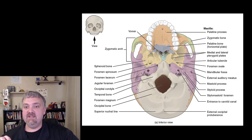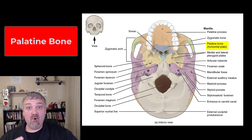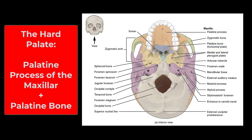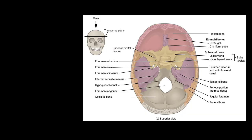Here we see the underside of the skull. The palatine bone is only visible from this view. As the name implies, it is part of your palate, but not the whole palate. Most of the hard palate — the roof of your mouth — is the palatine process of the maxilla; the palatine bone sits behind it. You can also see the occipital condyles again and the foramen magnum, which is the biggest hole in the skull — that's how the brain stem and spinal cord exit the skull.